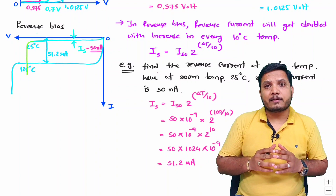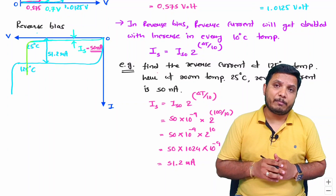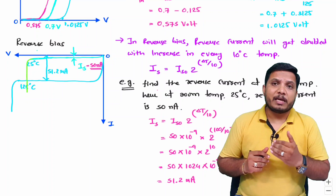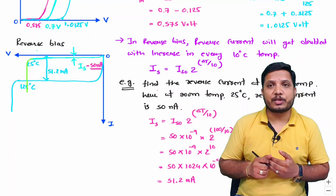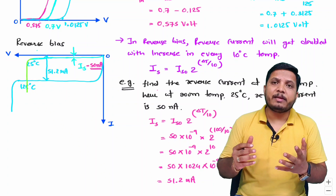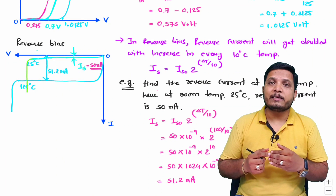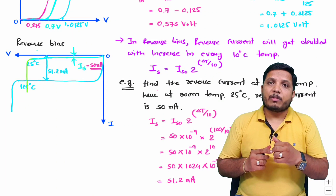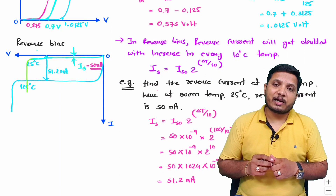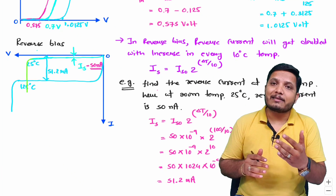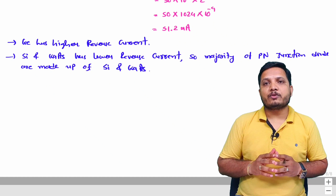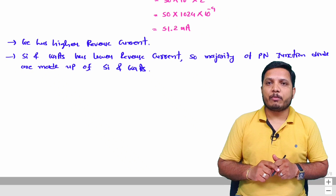This is how the characteristics of a PN junction diode change with respect to increase in temperature. An important point: with germanium, there is higher reverse saturation current, so it is more sensitive to temperature and is not commonly used to fabricate PN junction diodes. Silicon and gallium arsenide have less reverse saturation current and are less sensitive to temperature changes. I hope you understood this video — place any queries in the comment box.